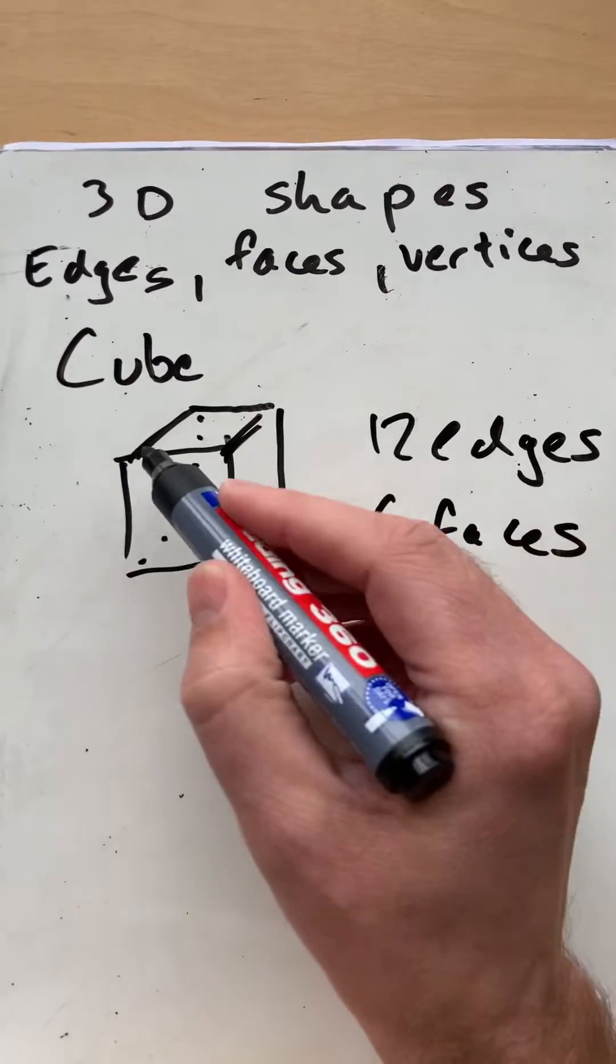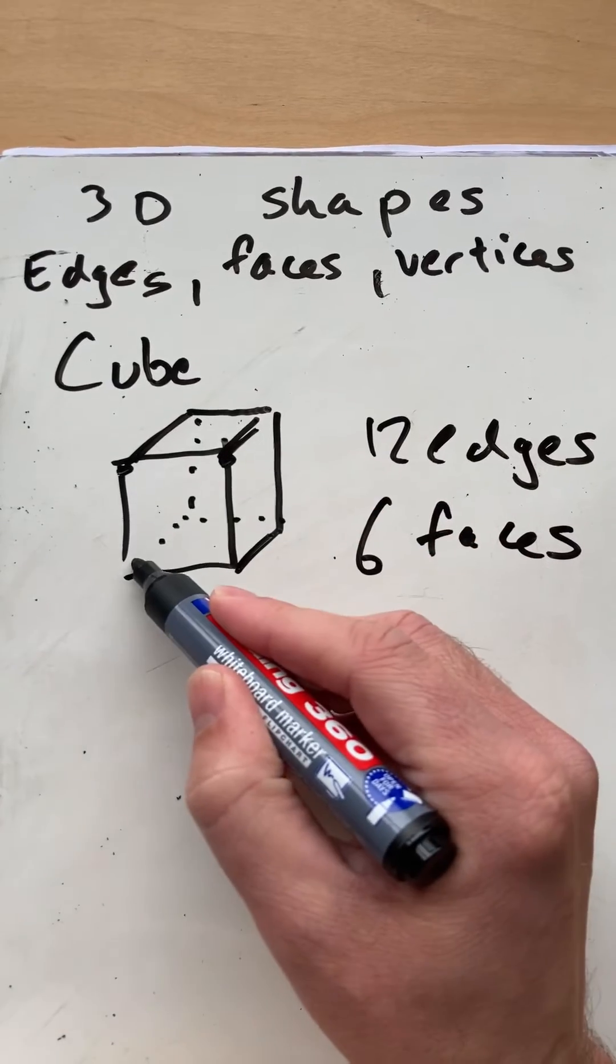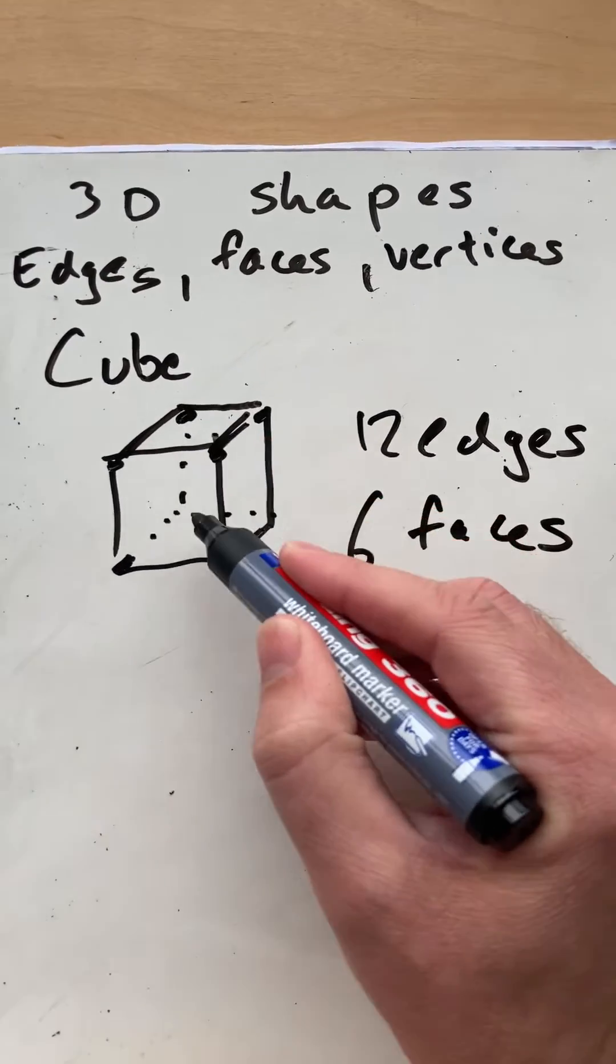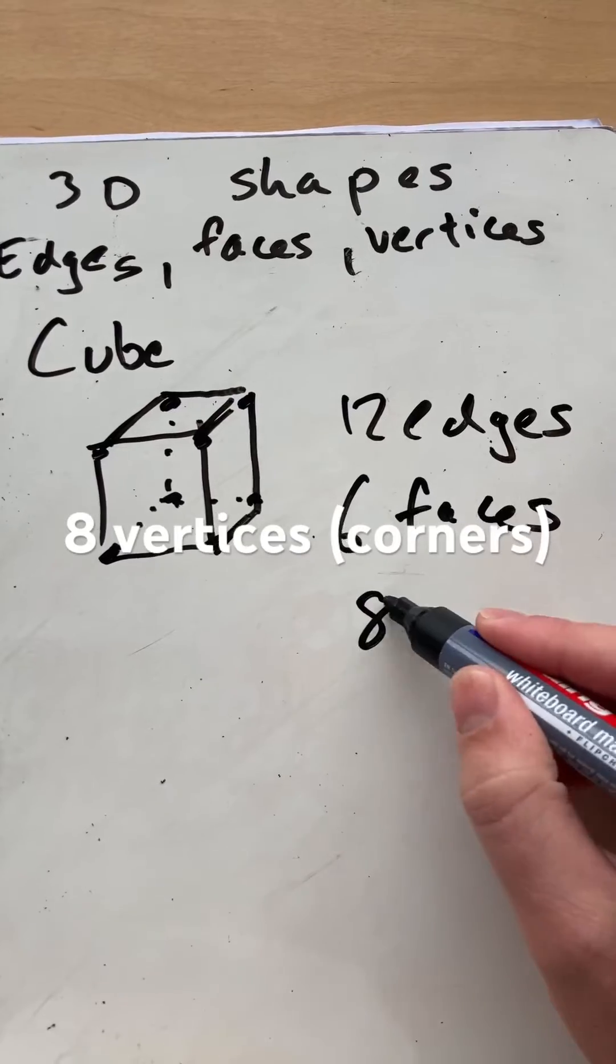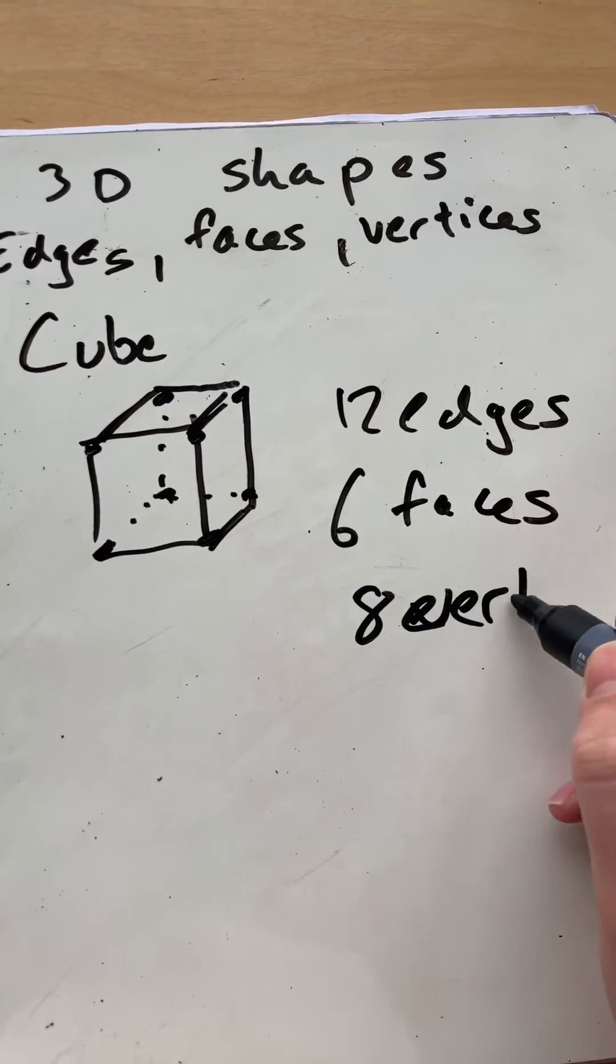Vertices are the corners, so there's 1, 2, 3, 4, and at the back 5, 6, 7, 8. 8 vertices.